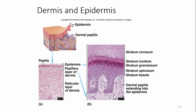Besides increasing surface area, the dermal papilla also create something called epidermal ridges — and epidermal ridges are your fingerprints. This is why you can't just sand off your fingerprints. By the time you get down to the dermis, it doesn't matter how much of the epidermis comes off, the fingerprints will come back because they're created by these dermal papilla.